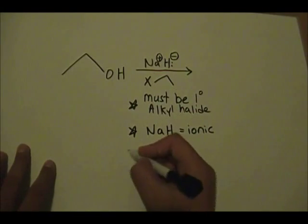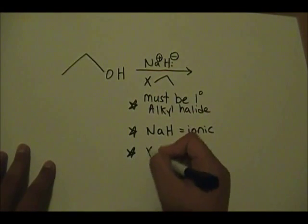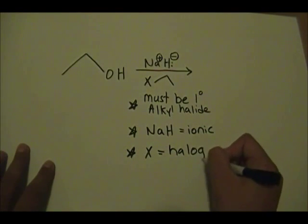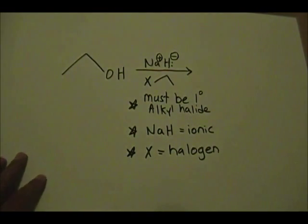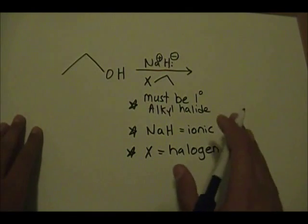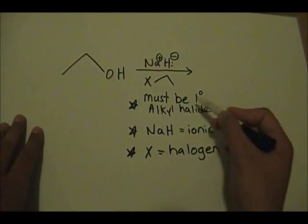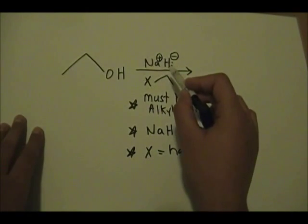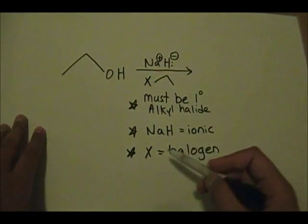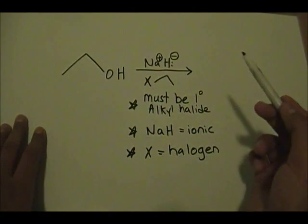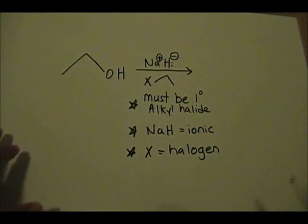And those are the things you need to know. The X equals halogen - bromine, chlorine, or iodine are the typical ones we see.